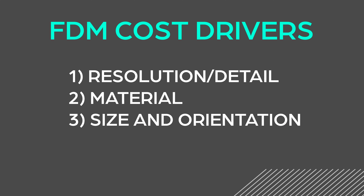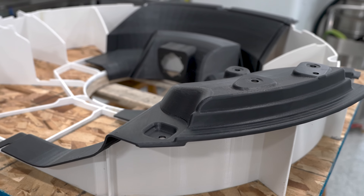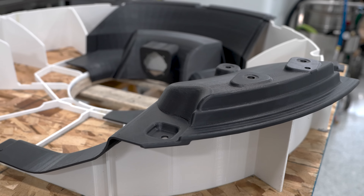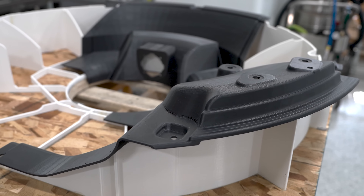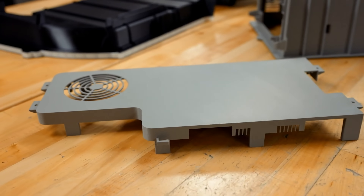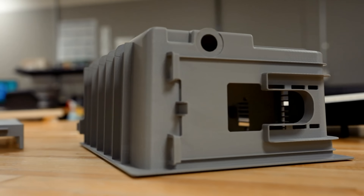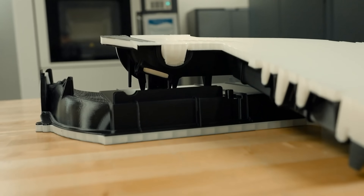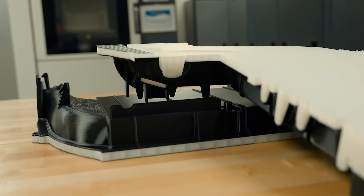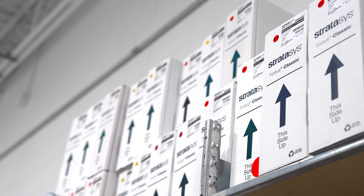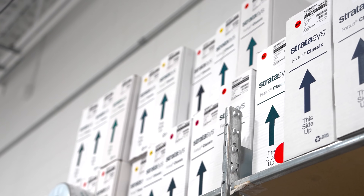There are several key factors that significantly influence the overall expense and cost of the FDM process. Resolutions range from five thousandths of an inch to twenty thousandths of an inch deposition, which dictates the level of detail of the printed object, impacting both the time and material used in the building process.